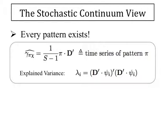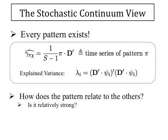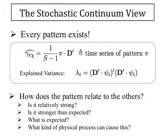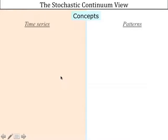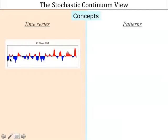First of all, be aware that every pattern exists in your data. If you have global sea level pressure data over hundreds of years, basically every pattern exists. Mathematically, you can define a pattern — a smiley face, a triangle, whatever — project it onto your data matrix, and what comes out is a time series with an amplitude. It will not be zero. If it doesn't have zero amplitudes, you can actually define and explain variance related to this time series and this pattern.